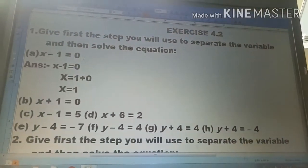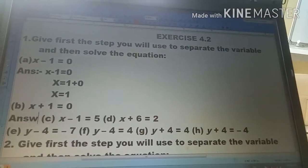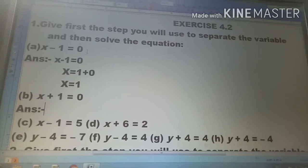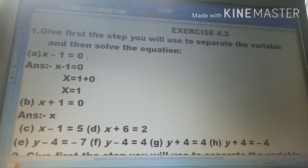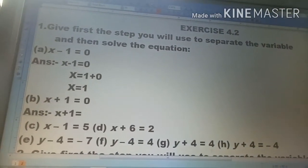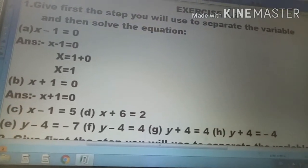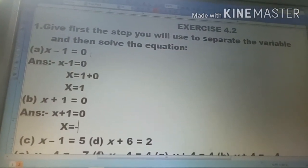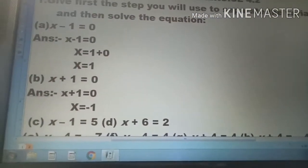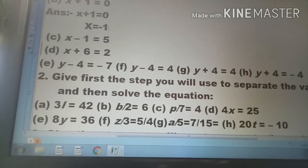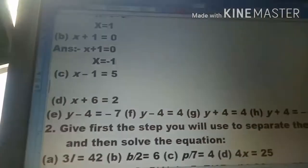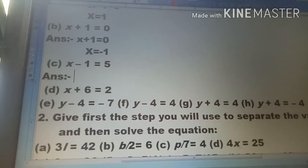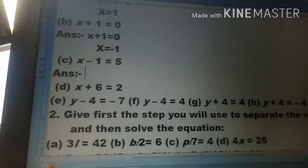Now let's solve the next question (b): x plus 1 is equal to 0. We're trying to solve the answer. When x plus 1 equals 0, we move plus 1 to the right side, it becomes minus 1. So x is equal to minus 1.